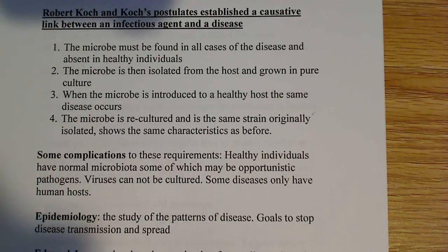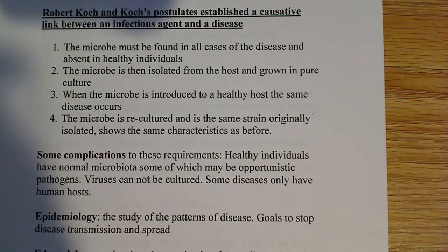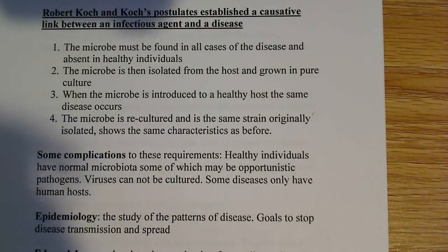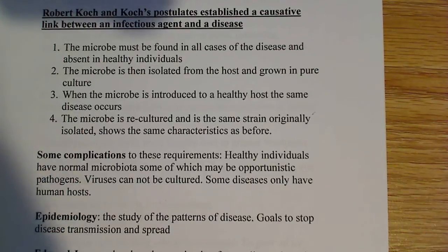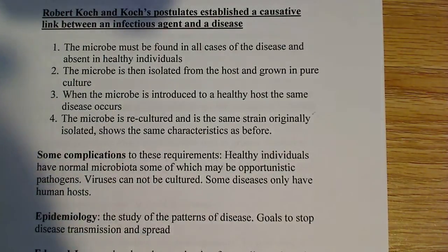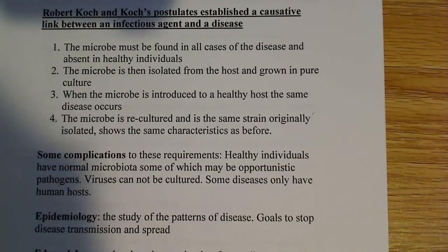There are complications with these postulates. Healthy individuals have normal microbiota — we all have a ton of microbes on our bodies right now. These microbes colonize our body regularly and don't cause harm; they actually help protect us. They're one of our immune defenses because they secrete antibiotic-type compounds that prevent other microbes from growing, and a large existing colony leaves little room or nutrients for a pathogenic agent to establish itself.